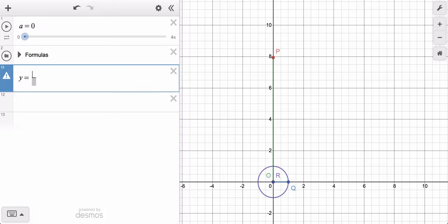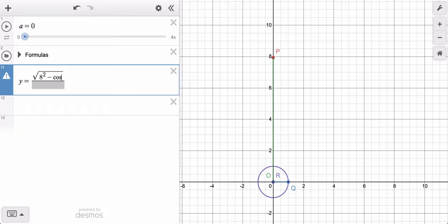Well, it's the height of P, which in my case is the square root of 8 squared minus the cosine squared of A plus the sine of A. That's the height of P, and we're subtracting the height of Q, which in my case is the sine of A.